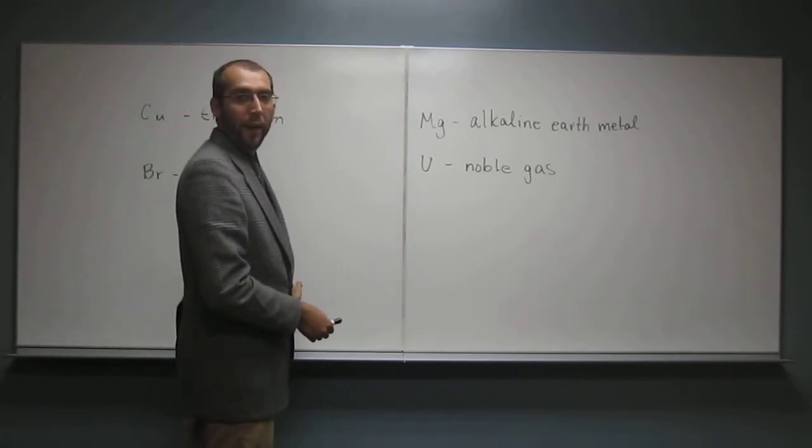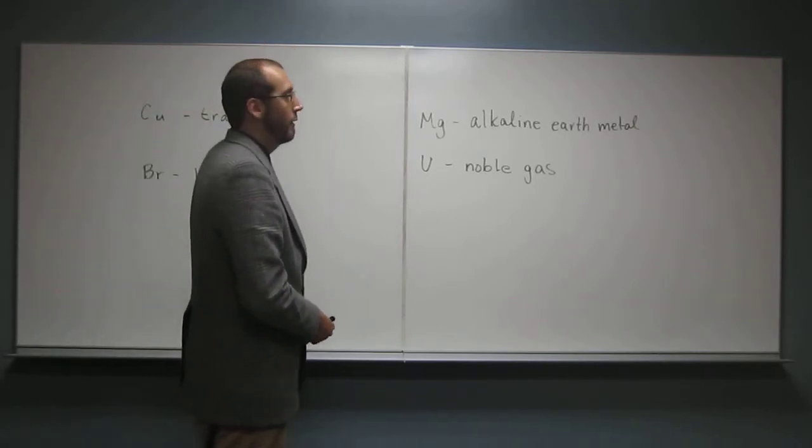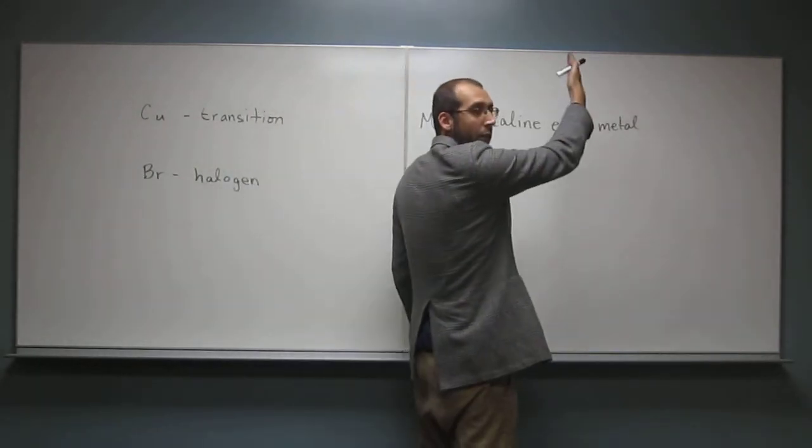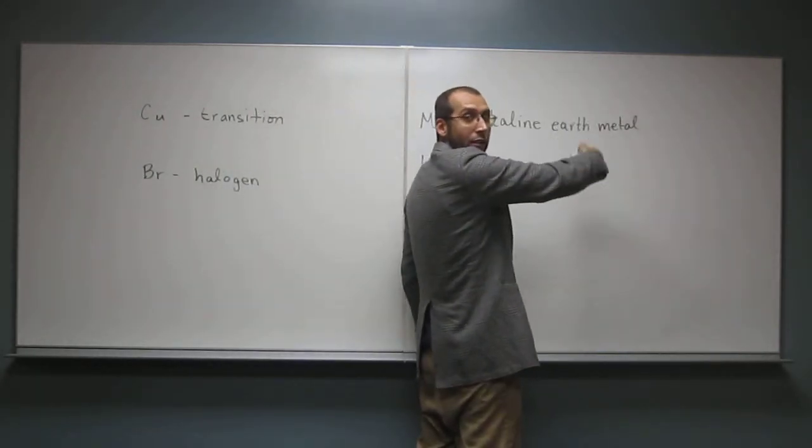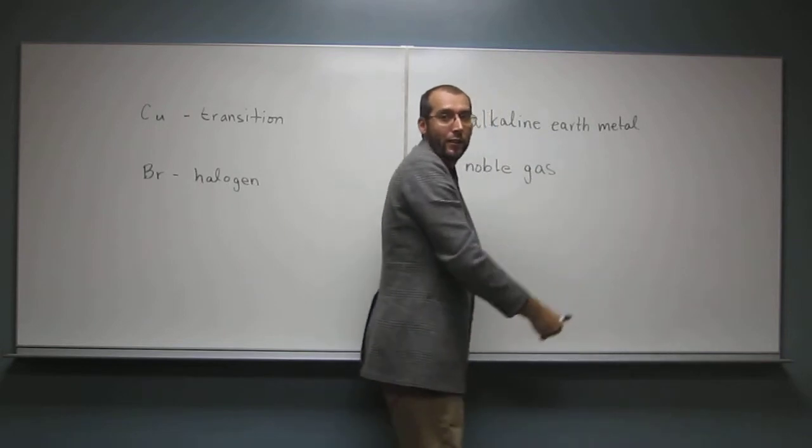So, it goes alkaline metals, alkaline earth metals, and then on the other side, number seven is halogens, and then eight noble gases, okay.